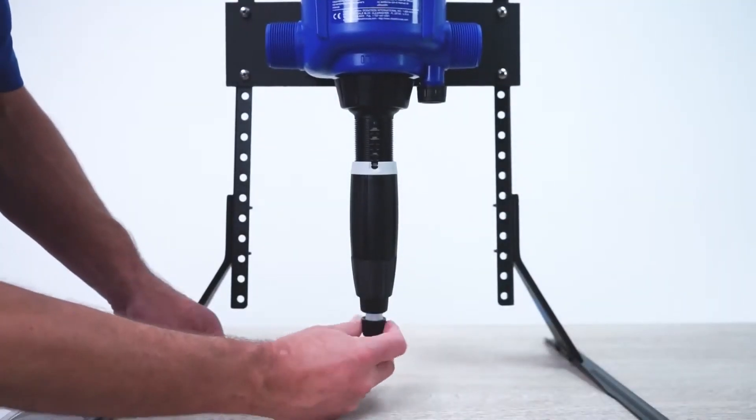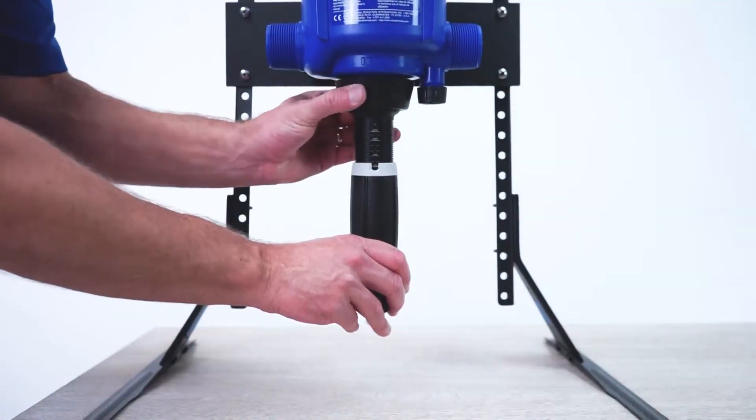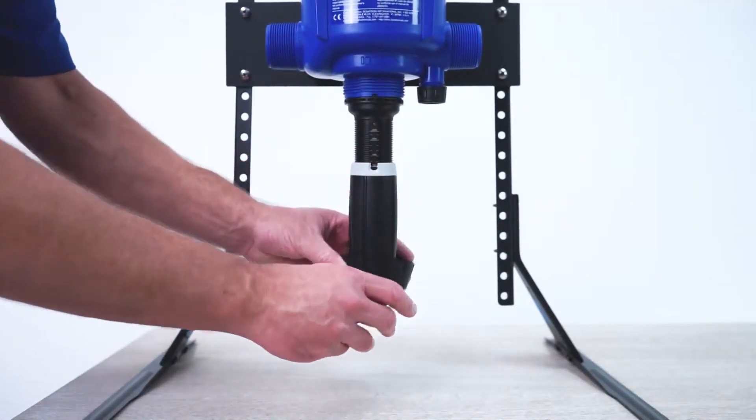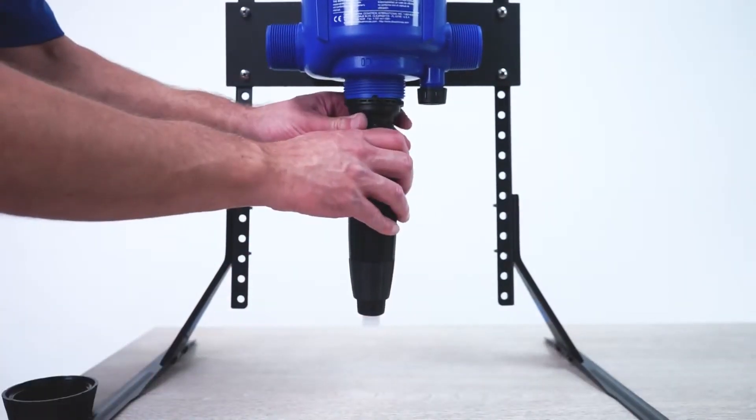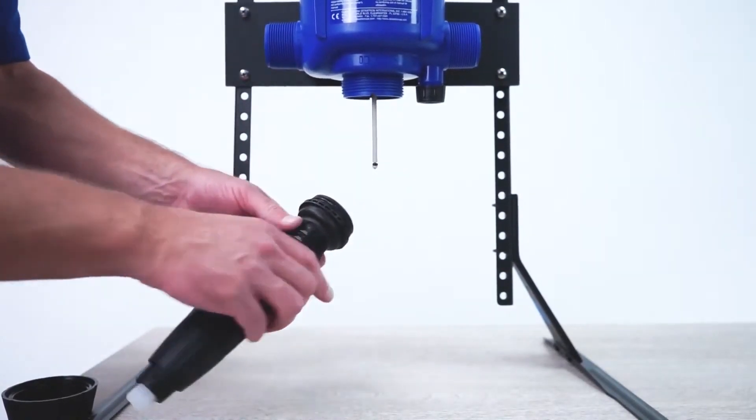To continue, unscrew the suction hose nut once more and set the hose aside. Unscrew the injection stem nut and remove. Then pull the injection stem straight out of the injector's body and set aside.